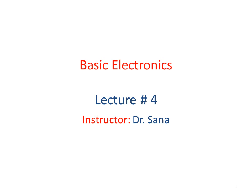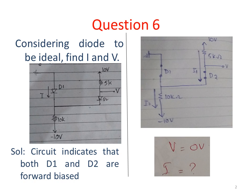Good morning students, welcome to lecture number 4 of the course of basic electronics. In today's lecture we are going to continue with the numericals of diodes. This is a bit complex circuit. Considering the diode to be ideal, find the value of the current I and voltage V. There is a D1 diode and a D2 diode here.